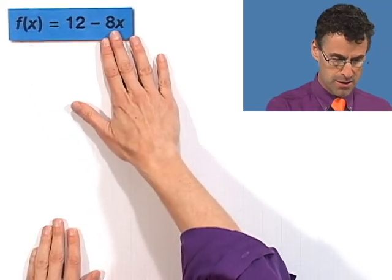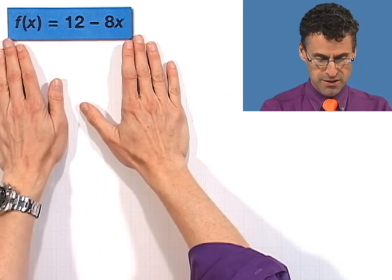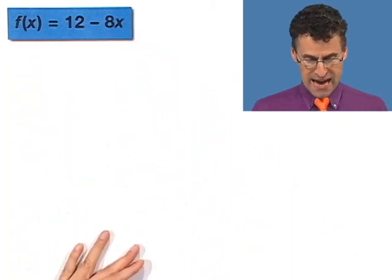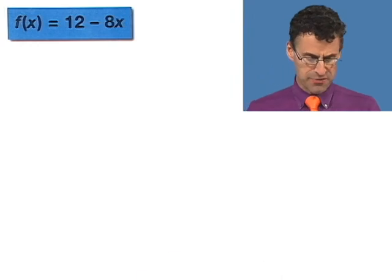They're kind of special type of function equation type things that we'll see. One is just, for example, here's a function, f(x) equals 12 minus 8x, and here's the kind of question we often get asked.